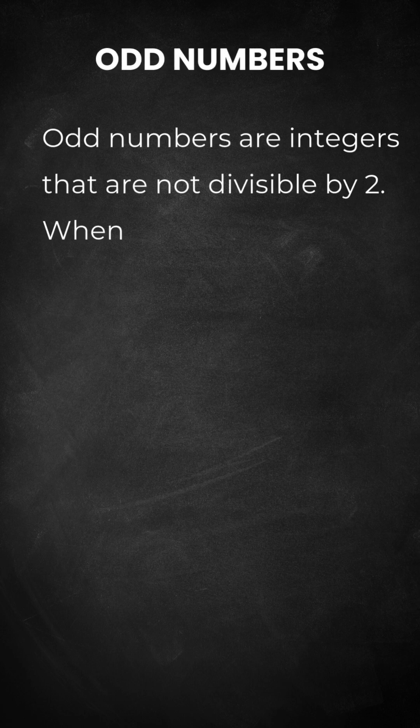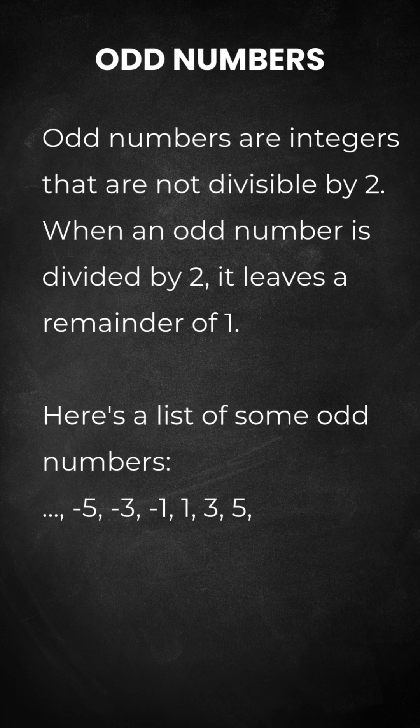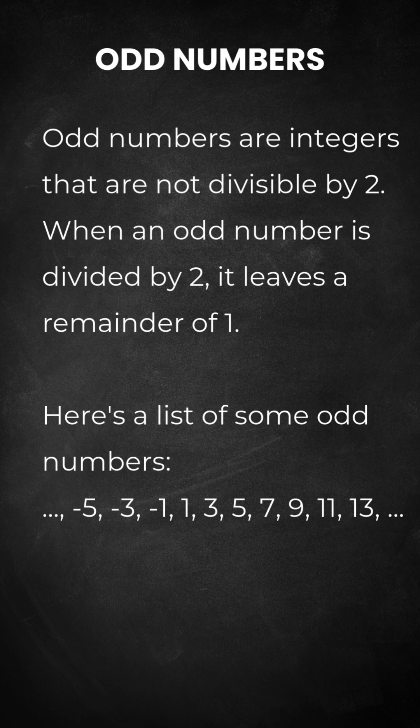Let's learn about odd numbers. Odd numbers are integers that are not divisible by 2. When an odd number is divided by 2, it leaves a remainder of 1.